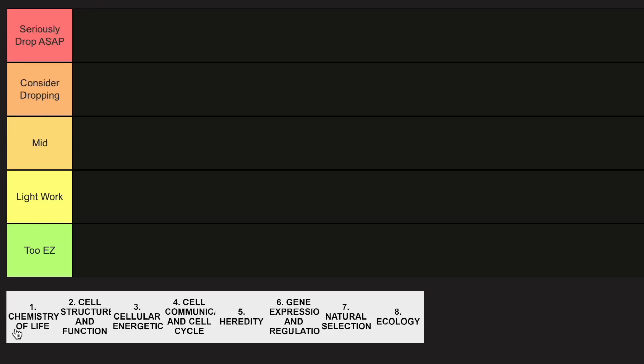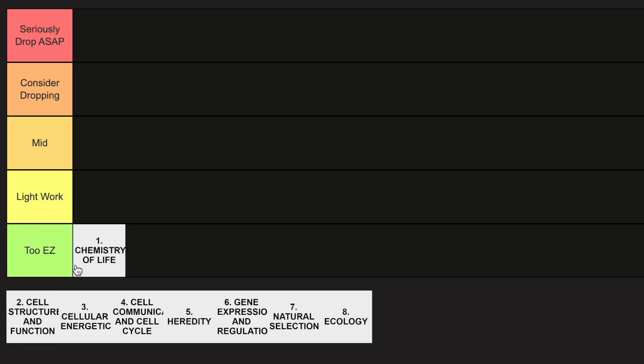Here's the definitive AP Biology unit tier list in less than a minute. Starting off with Unit 1, Chemistry of Life — this is definitely the too-easy category. If you've done pre-AP or Honors Biology before, you know this is kind of those first few weeks of that course, so it's a pretty easy build-off, and it is the intro unit for a reason.